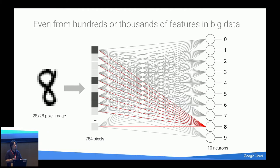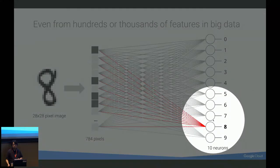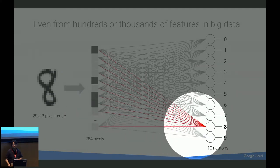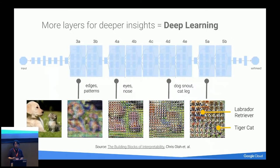You can extend the same techniques to higher-dimensional data such as images, audio, or natural language. For example, a 28×28 pixel image means you have a 784-dimensional vector — just a bunch of numbers representing black or white pixels. You can put those pixel values directly into a neural network, where neurons check certain pixels to calculate the probability of whether the image is the digit 8 or not. If you have multiple layers — a so-called deep neural network — something amazing can happen.